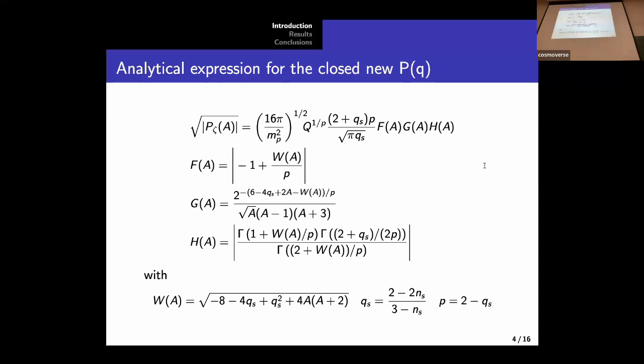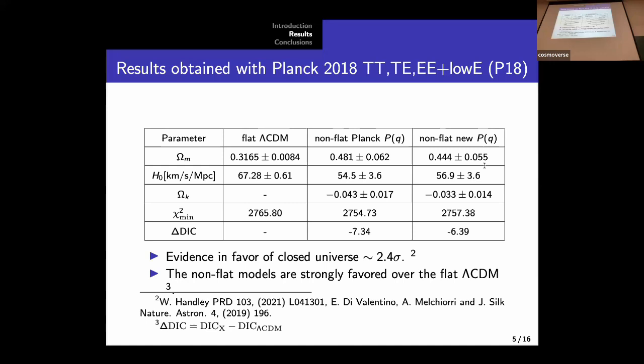Now let's have a look at the results that we get when we test the theoretical predictions of those models with the Planck temperature and polarization data. For the sake of simplicity, here I just show the most relevant parameters for the discussion, but we can find the other constraints in the reference. As we mentioned, we obtained very high value for the omega parameter. This means that these models that have an extra degree of freedom can deal with the lensing anomaly by increasing this parameter as expected. So this means that we have some evidence for a closed universe. This was already noted in previous references.